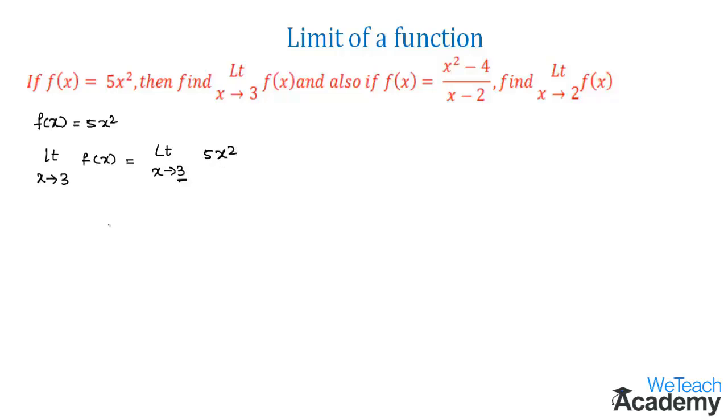Let us substitute the x value 3 in this function. So this would be 5 times 3 whole square. That implies 5 times 3² is 5 times 9. By multiplying 5 and 9 we get the value as 45.